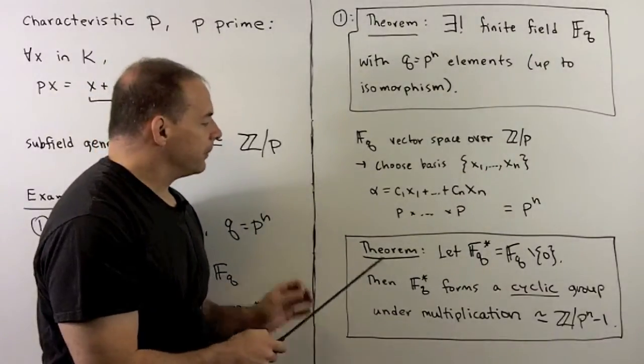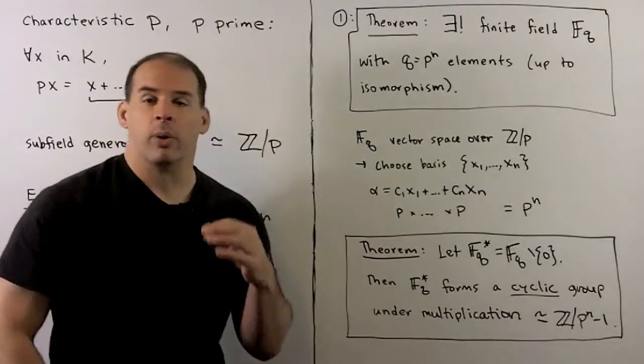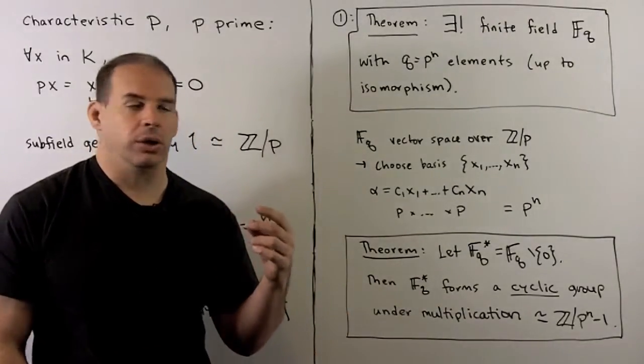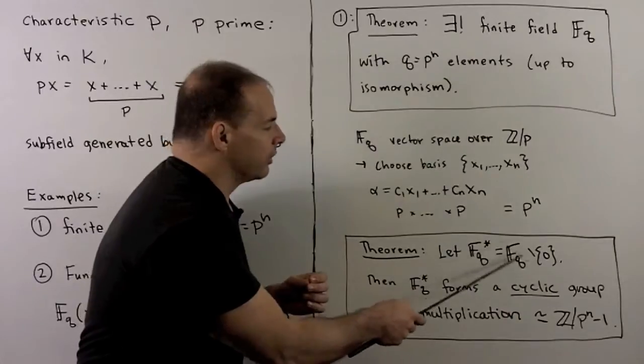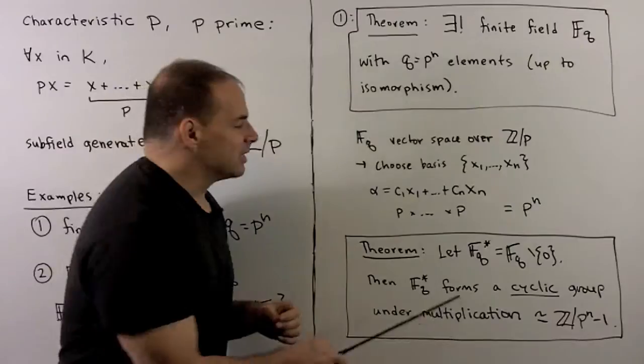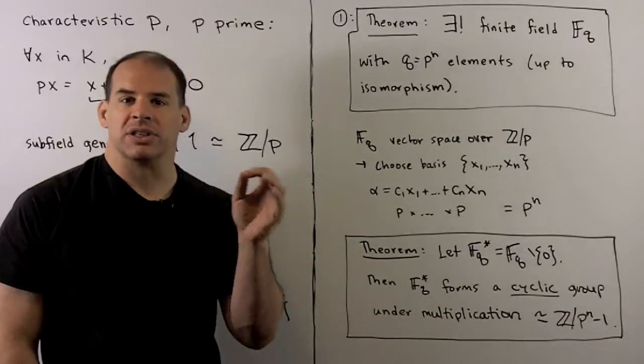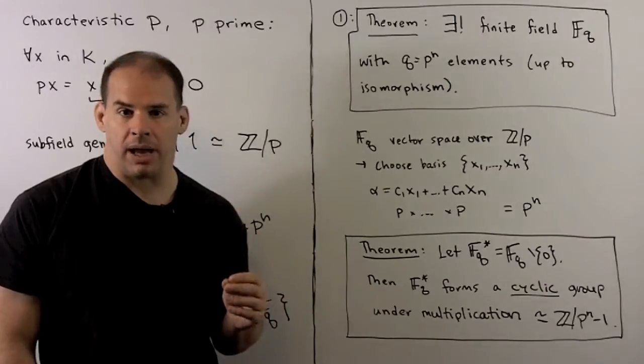Another theorem that we have, and so this one we did prove, consider a group of multiplicative units in F_q. So this is just F_q, and then we throw away 0. Group of units is going to form a cyclic group under multiplication. Then it will be isomorphic to the cyclic group Z mod p to the n minus 1.